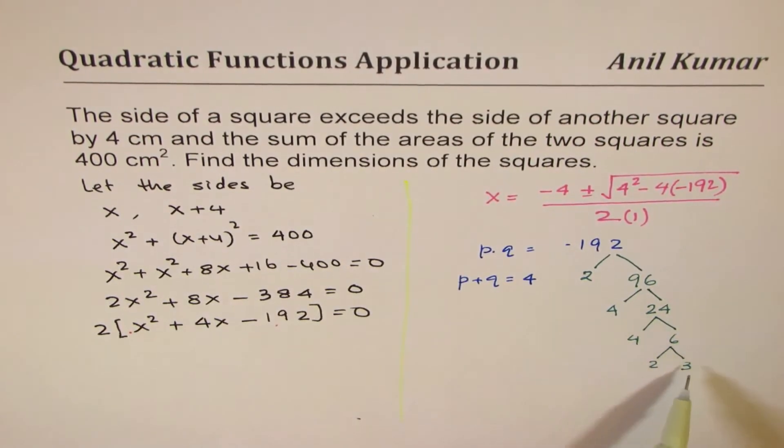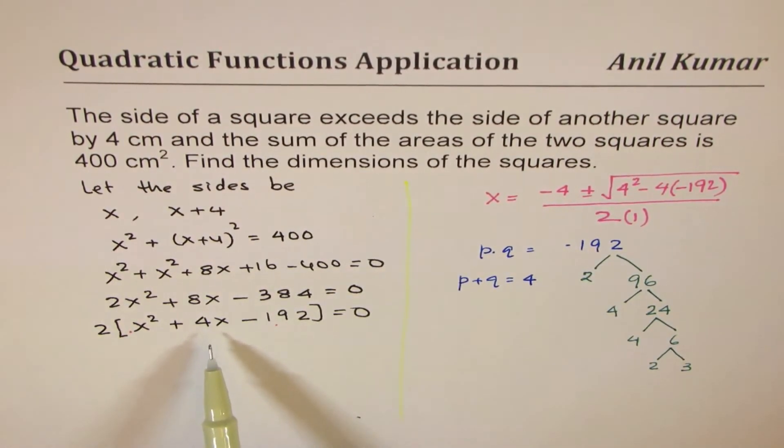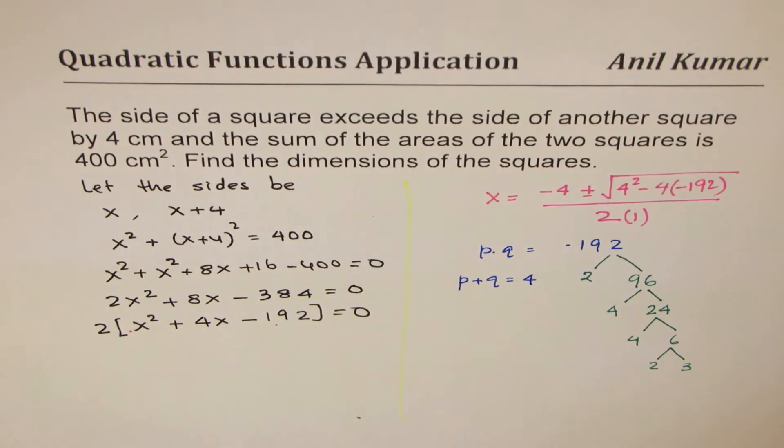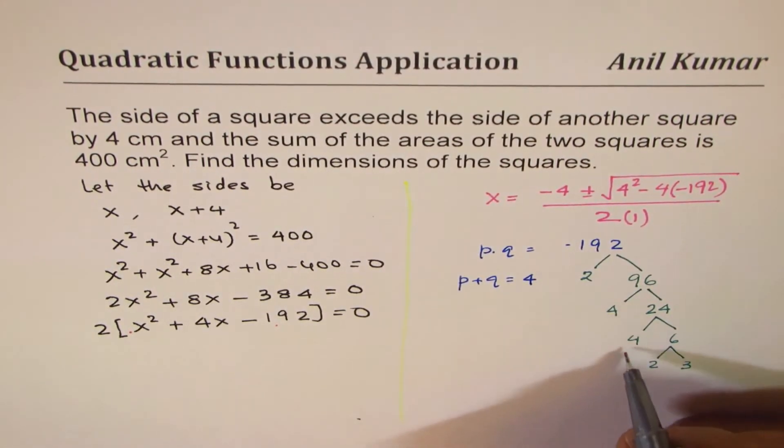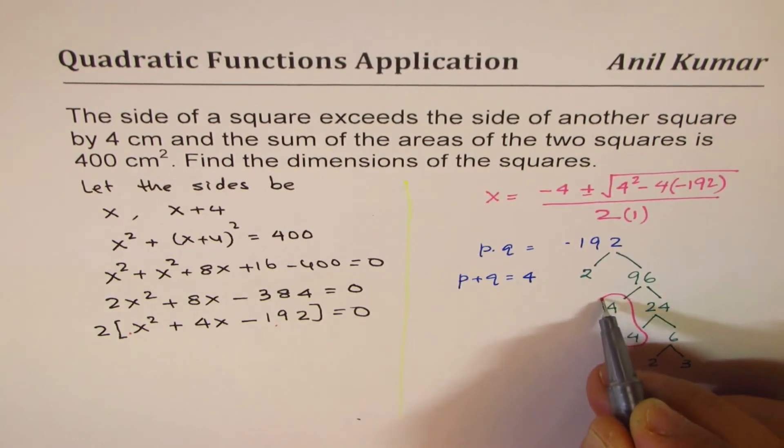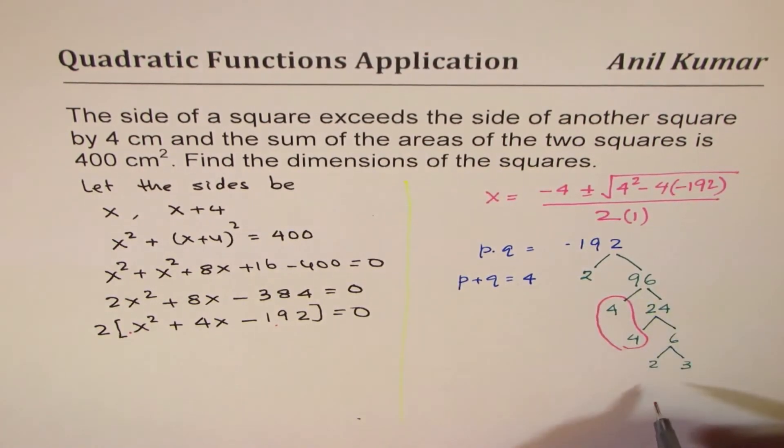We've broken it down to smaller numbers. We're looking for when you multiply all these numbers you'll get 192, but we need positive 4 when we add. So what combination could give you positive 4? We see from here that if we combine these two numbers, 4 times 4 is 16 and the other two is 12.